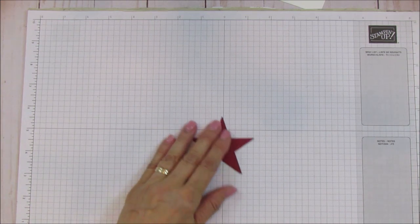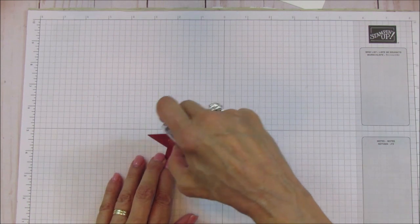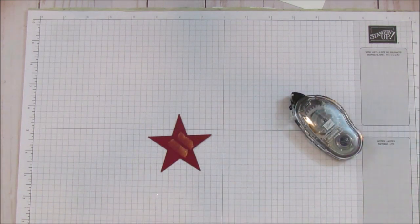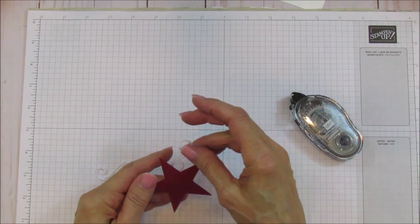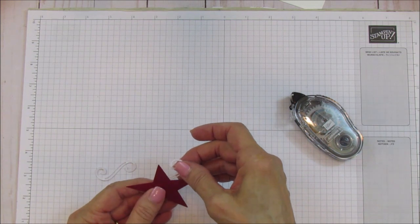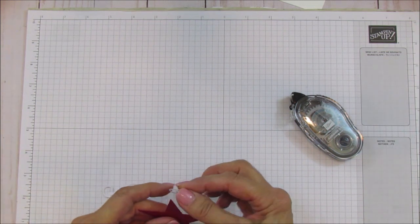I love all these stars. So that's the star right there. And what I'm going to do is add a little bit of snail to the back and we're going to add our little sparkles here. It just gives it a little bit of added interest.